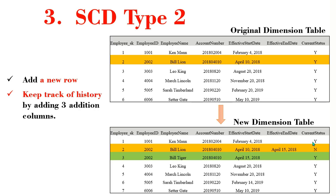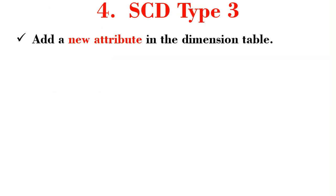This is the most popular type of slowly changing dimension implemented in dimensional data warehouses. The fourth type is type 3. Here, instead of introducing a new row, we introduce a new column. This is less frequently used because there is a limited number of columns you can add to a table.